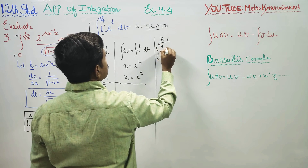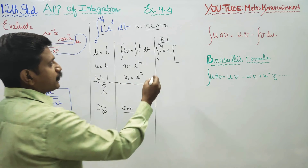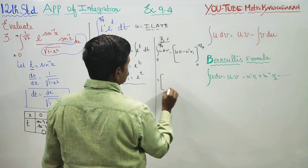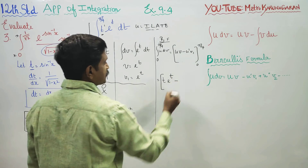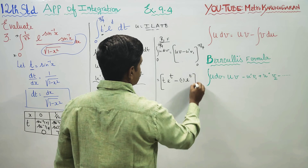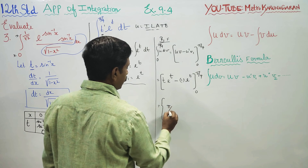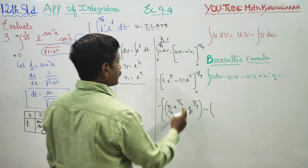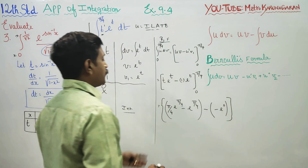Applying Bernoulli's formula: integration of u dv from 0 to π/4 equals u·v - u'·v₁, evaluated from 0 to π/4. Here u = t, v = e^t, u' = 1, v₁ = e^t. So we get [t · e^t - e^t] from 0 to π/4. The upper limit gives π/4 · e^(π/4) - e^(π/4), and the lower limit: e^0 = 1, so it contributes 0 · 1 - 1.